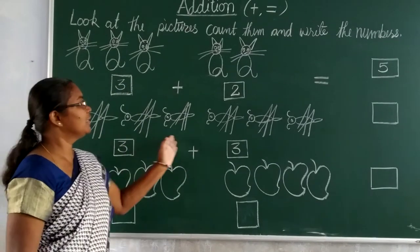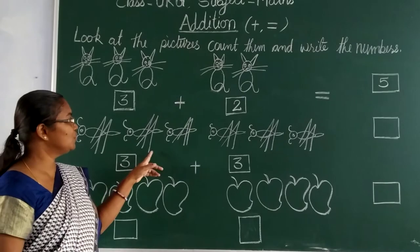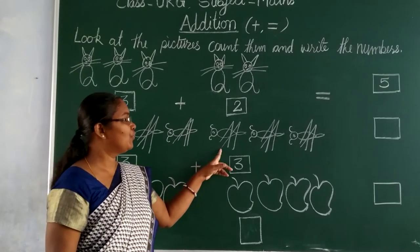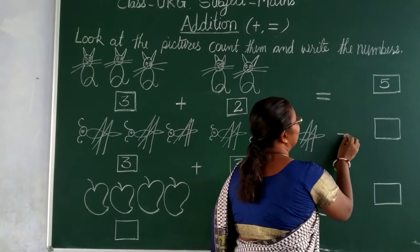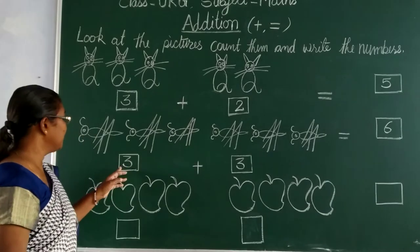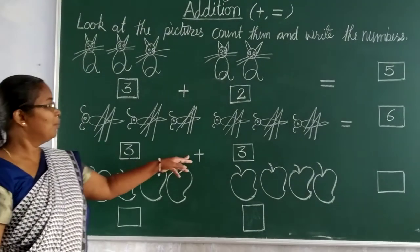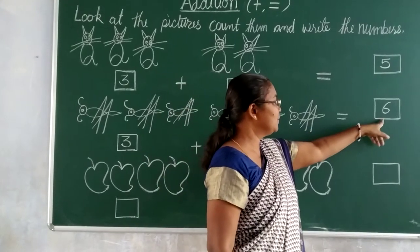That means together we have to count. 1, 2, 3, 4, 5, 6. So equal to total number 6. Next. We read 3 plus 3 is equal to 6.